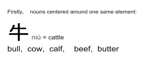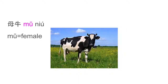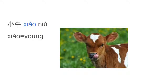I'm going to talk about 'niu' in this case. Niu means cattle, a type of farm animal. When we need to know more details about niu, like whether it's male or female, we add one word in front of niu. For male, we add gong — gong niu. For female, we add mu — mu niu. For little ones, we add xiao — xiao niu.